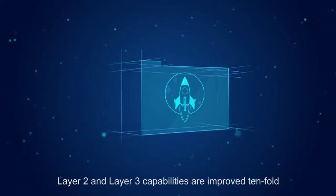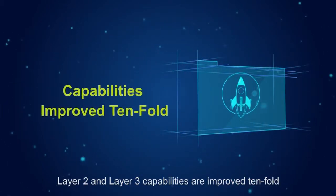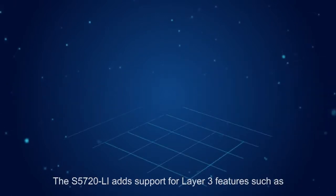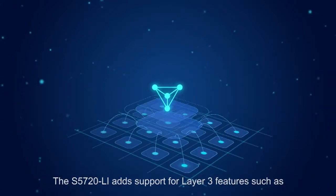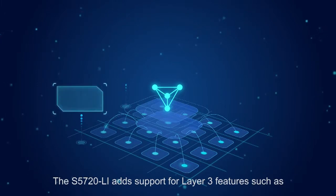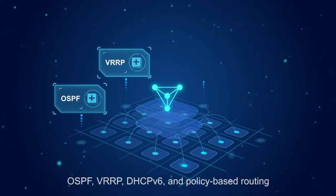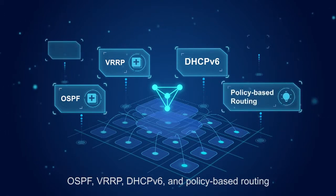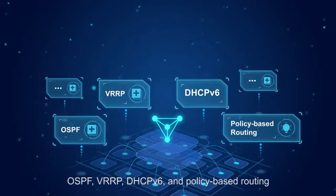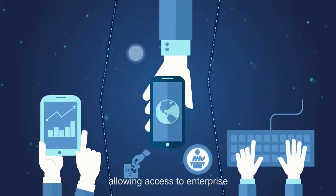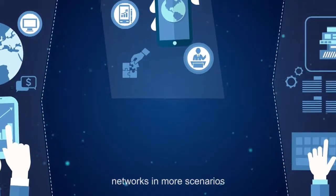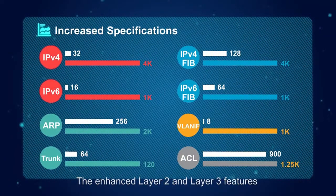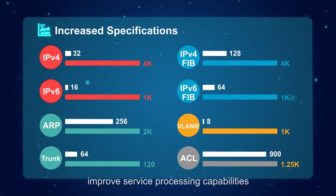Layer 2 and layer 3 capabilities are improved tenfold. The S5720 Li adds support for layer 3 features such as OSPF, VRRP, DHCP version 6, and policy-based routing, allowing access to enterprise networks in more scenarios. The enhanced layer 2 and layer 3 features improve service processing capabilities.